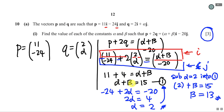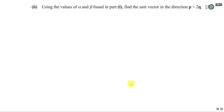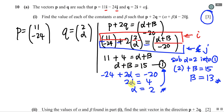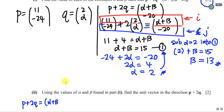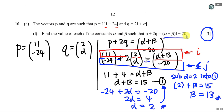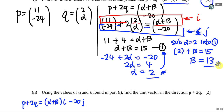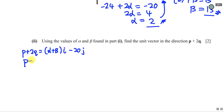Moving on to part (b): using the α and β found in part (a), find the unit vector of p + 2q. First I need to know what p + 2q is. From the equation above, p + 2q = (α + β)i - 20j. Substituting α = 2 and β = 13: 2 + 13 = 15, so p + 2q = 15i - 20j.